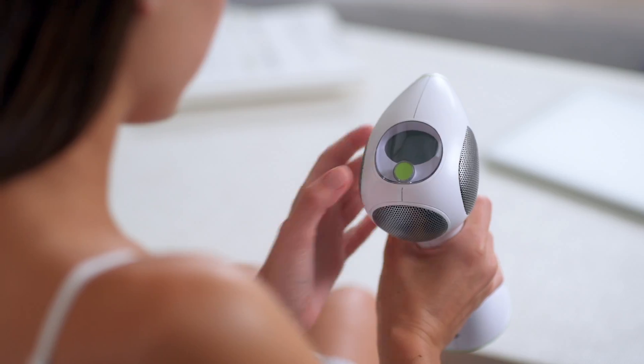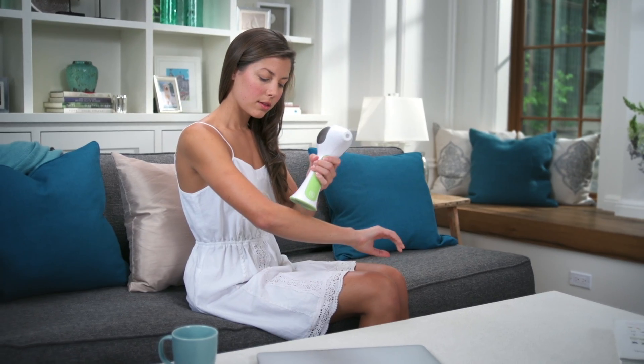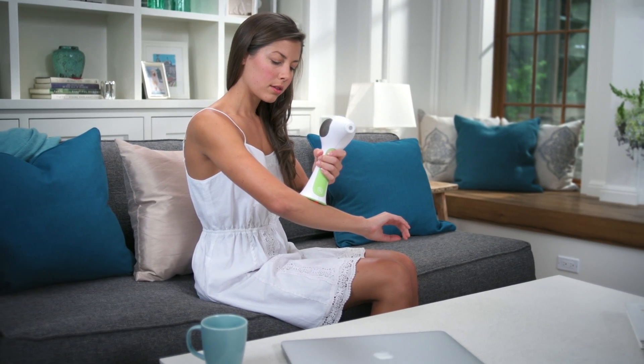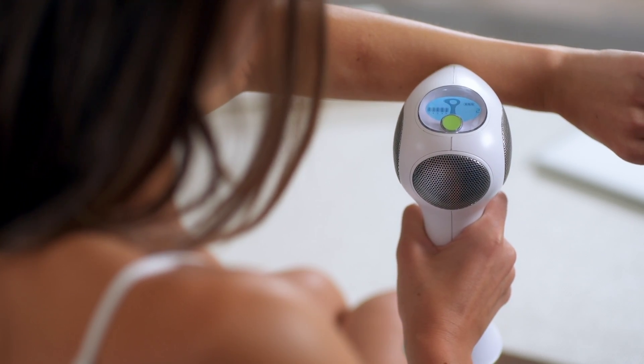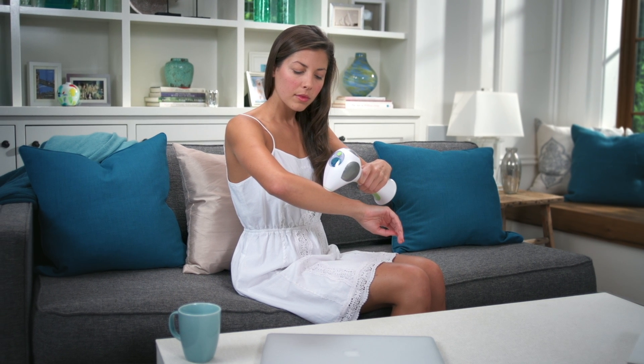All you do is press the power button, unlock it, and the sensors recognize that it's placed against your skin. The laser light flashes, but you don't really see it because the light is targeting the melanin in the hair follicle.